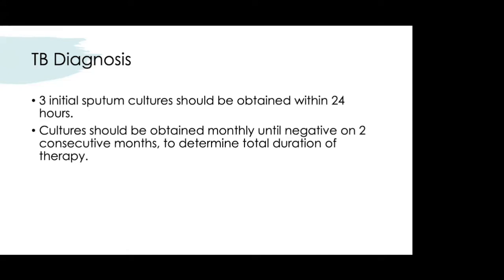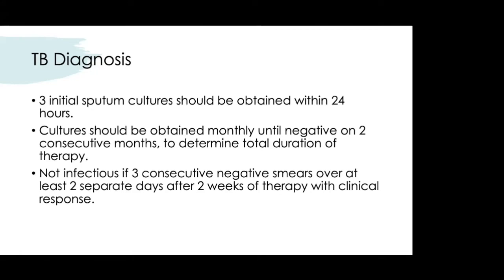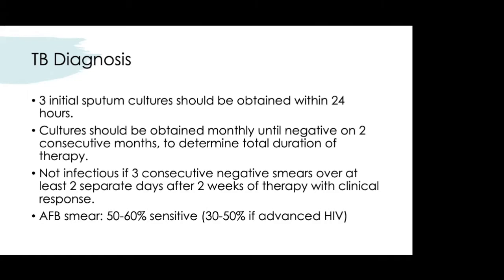Cultures should be obtained monthly until negative on two consecutive months to determine total duration of therapy. Patients are considered non-infectious with three consecutive negative smears over at least two separate days after two weeks of therapy with clinical response. AFB smear sensitivity is about 50–60%, dropping to 30–50% in advanced HIV.